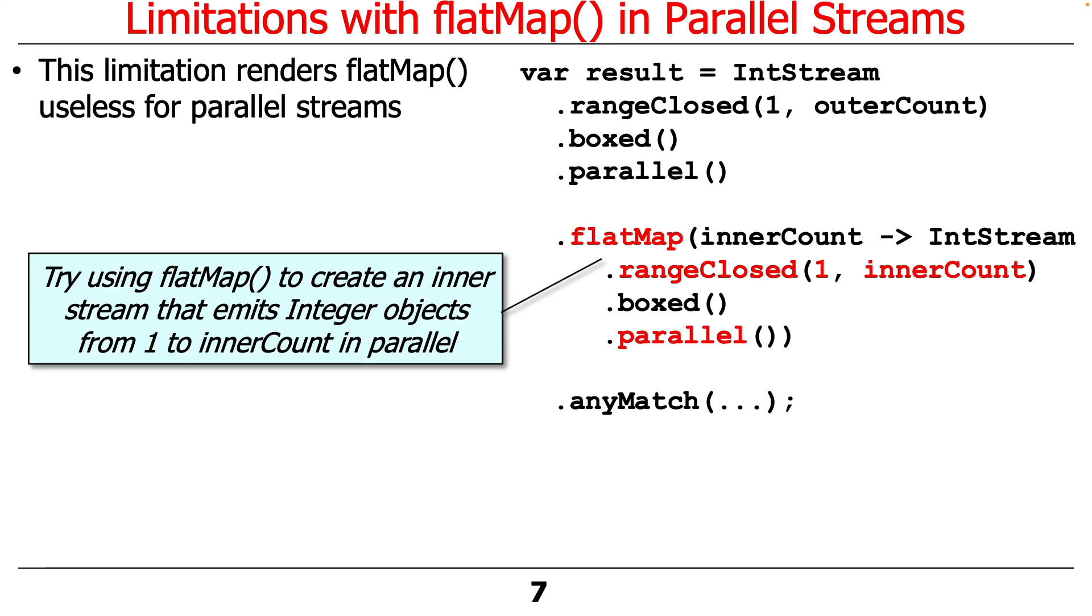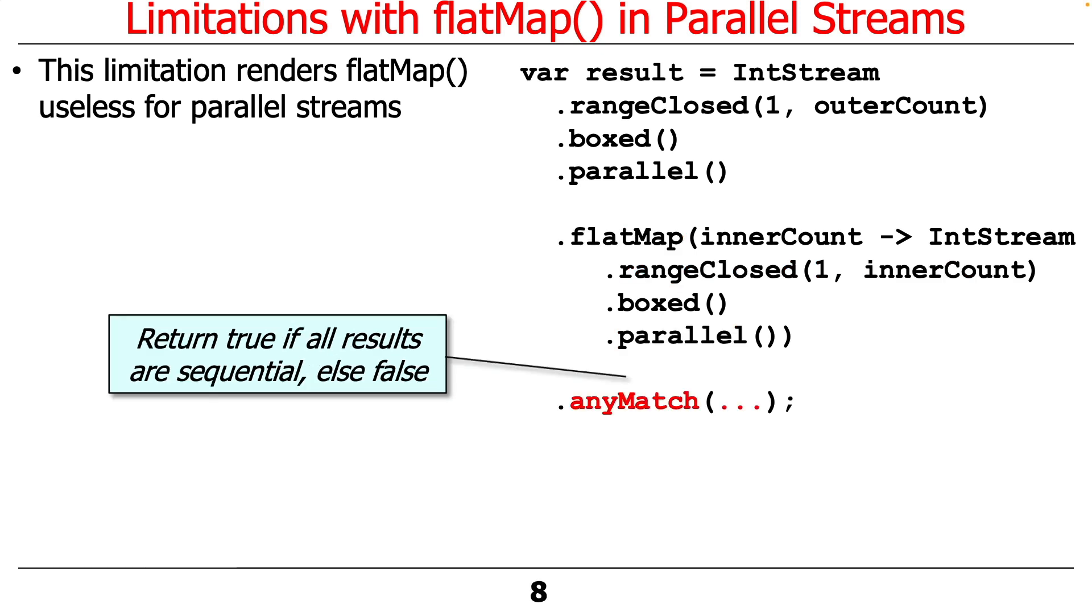And then what we want to do is we want to say for each of these things, then we want to use flatMap to go and compute some stuff to see how it's going to work. And we would like that to run in parallel, but as it turns out, if we run this code,